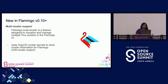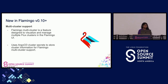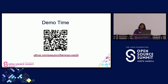What's new recently is multi-cloud cluster support. Flamingo's multi-cluster feature is designed to visualize and manage multiple Flux clusters in the Flamingo UI. It uses Argo CD cluster secrets to store cluster information for Flamingo's multi-cluster support. Now I'm going to pass it over to Joaquin.